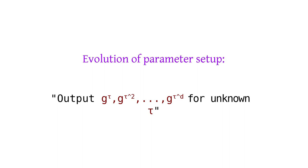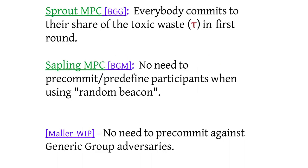How did we do this in Sprout? We had this protocol where you have a bunch of participants. Each contributes some randomness to this tau that they construct together. In Sprout, each participant committed in advance to their share of the randomness — their share of this tau, which is what we call the toxic waste. If someone discovers tau, they can forge a trillion Zcash.